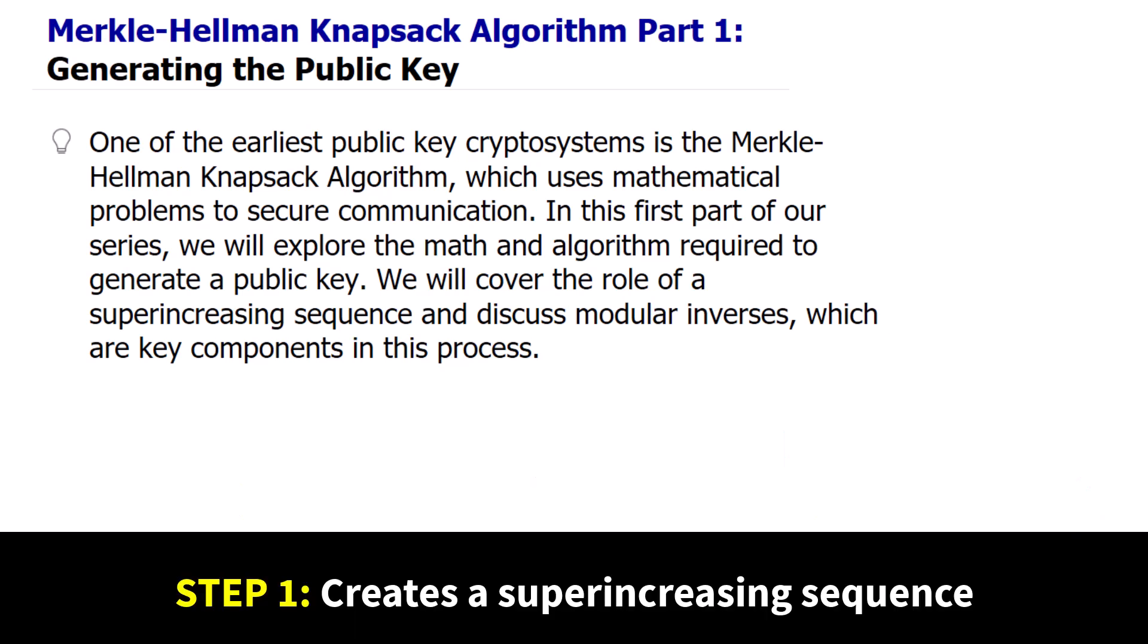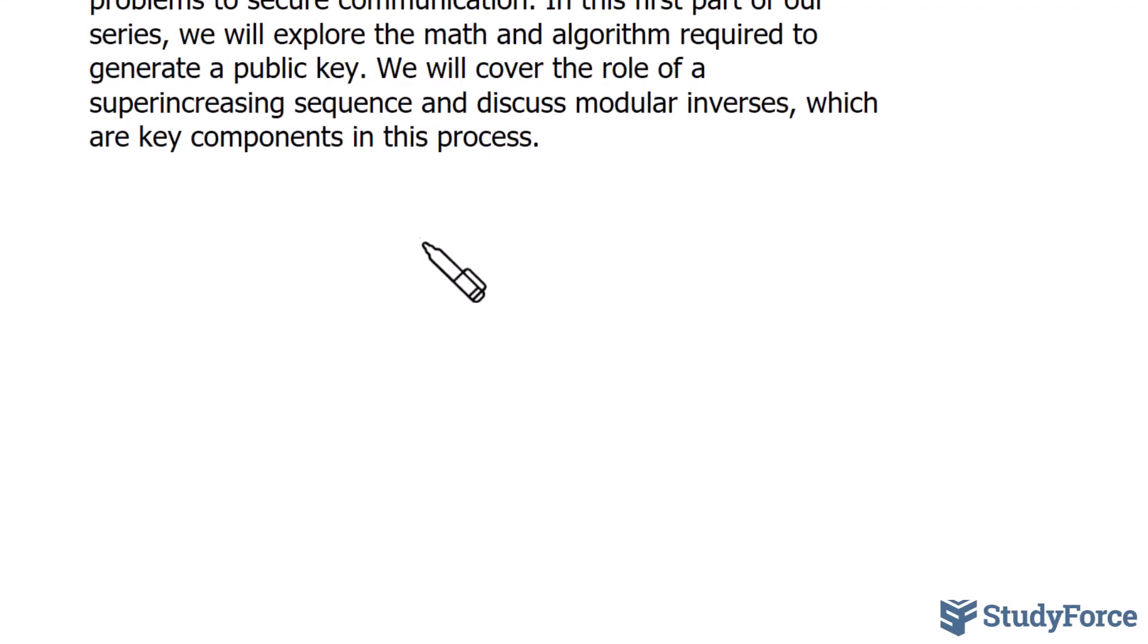The very first step in generating a public key is to create a super-increasing sequence. A super-increasing sequence is a sequence of numbers where every subsequent term in the sequence is greater than the sum of all previous numbers in that sequence. For example, let's call our sequence D, and my sequence will be the numbers 2, 3, 7, and 13. Take a look. 3 is greater than 2. 7 is greater than 3 plus 2, which sums to 5. And 13 is greater than 7 plus 3 plus 2, which sums to 12. Therefore, we say D is a super-increasing sequence.